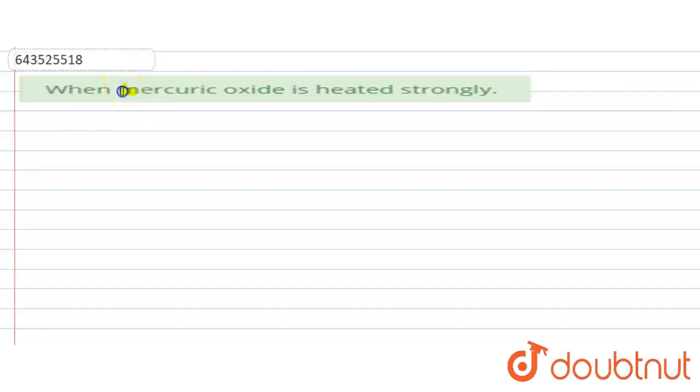The question says when mercuric oxide is heated strongly, then what happens or what kind of product is formed?